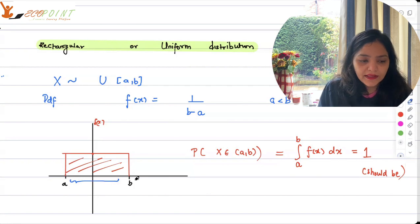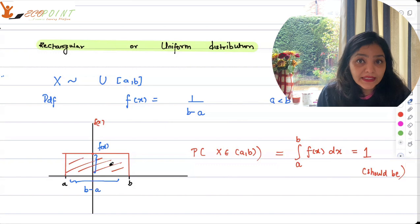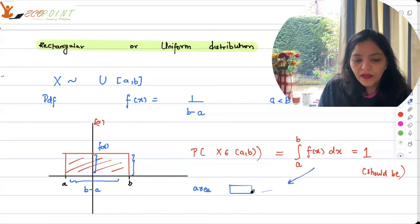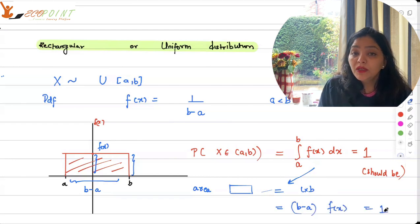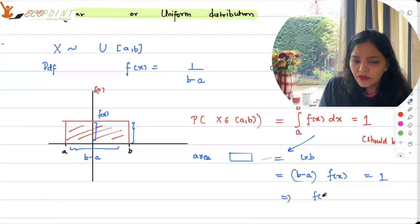Let's take this length. Considering this length, this length has to be b minus a, right? So what we want to know is that this height, that is fx, what this fx is, this height is fx, right? Now area that I've taken in integral is nothing but area of the rectangle. Area of the rectangle is length into breadth, which we can take as b minus a into fx. And now this should be equal to 1. So what do you think fx should be? It will be 1 upon b minus a.